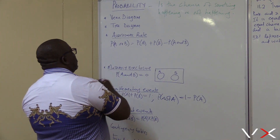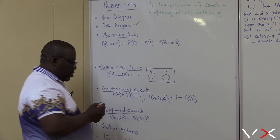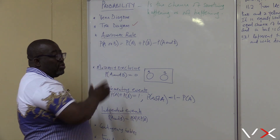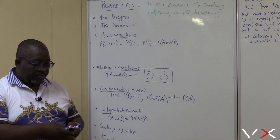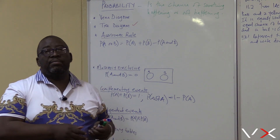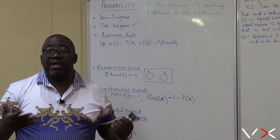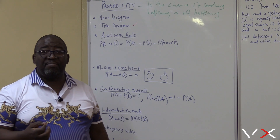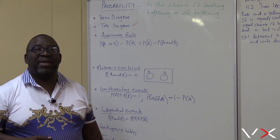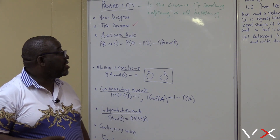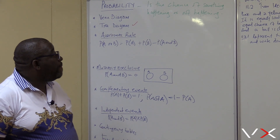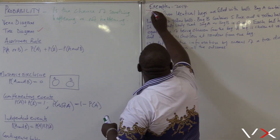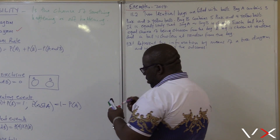Let's start briefly with a tree diagram. We'll do two of these, then go to the Venn diagram. Like any tree, a tree has branches — we'll also be talking about branches in this section. Let's look at the question set in the 2014 exemplar.